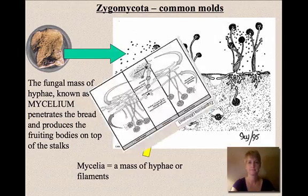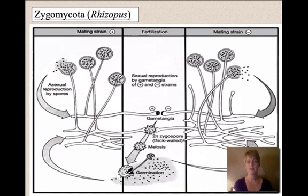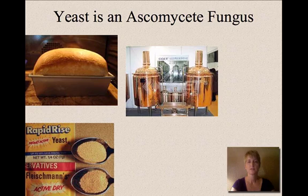In the sexual reproduction of bread mold, the hyphae grow toward each other. One hypha is designated as plus and one as minus. They grow together, undergo meiosis, and when the spore germinates it releases spores — that is a form of sexual reproduction.